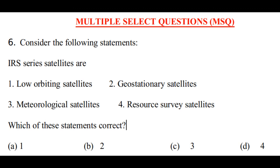Question 6: Consider the following statements. IRS series satellites are: 1) low orbiting satellites, 2) geostationary satellites, 3) meteorological satellites, 4) resource survey satellites. Which of these statements are correct? In multiple select questions you must mark all correct options — even missing one correct option gives you 0. The correct statements are 1, 2, and 4, so you have to mark option A, option B, and option D.